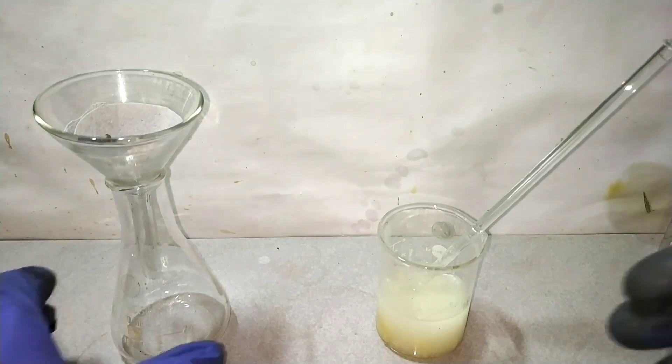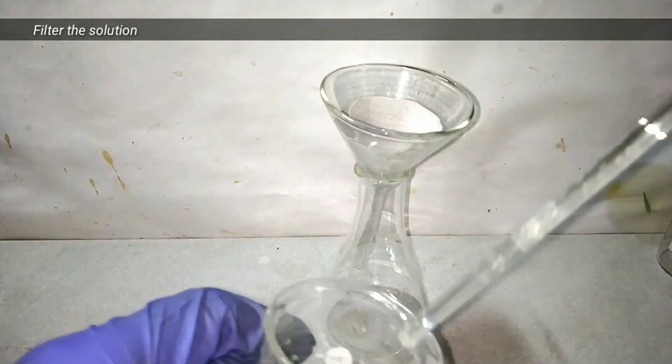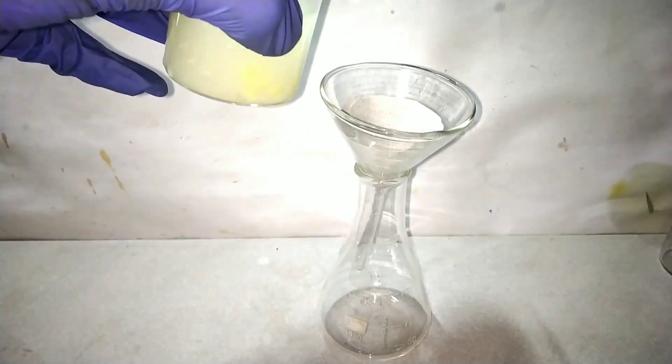After 30 minutes of stirring we are left with a pale yellow color in the beaker. Now we filter it by gravity filtration method.